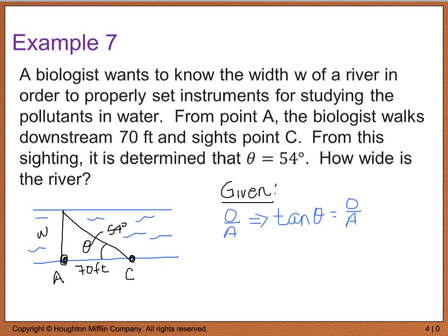So now, all I have to do is solve for theta. So I know that the tan, I'm sorry, solve for the opposite side. So tan theta, and theta is going to be 54 degrees, is equal to the opposite side length, which is really w, divided by our adjacent side, or 70 feet.